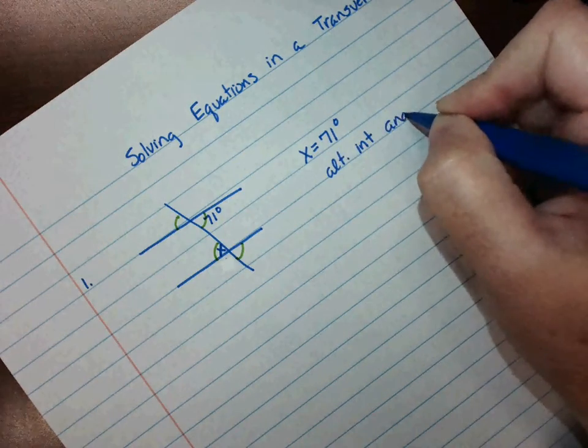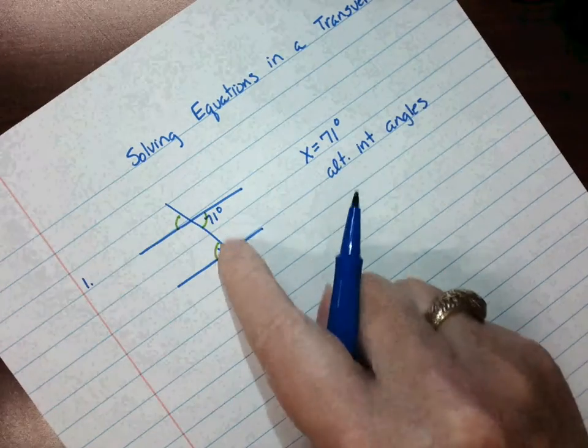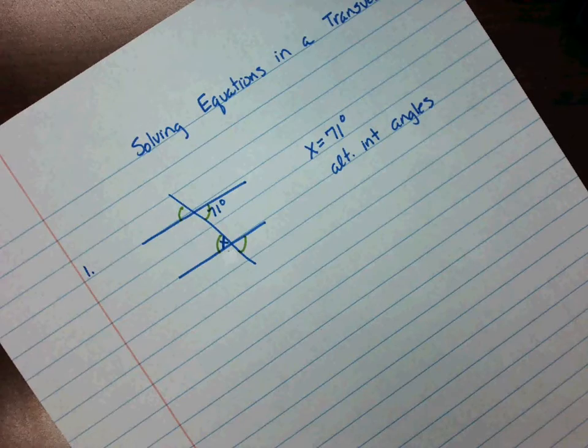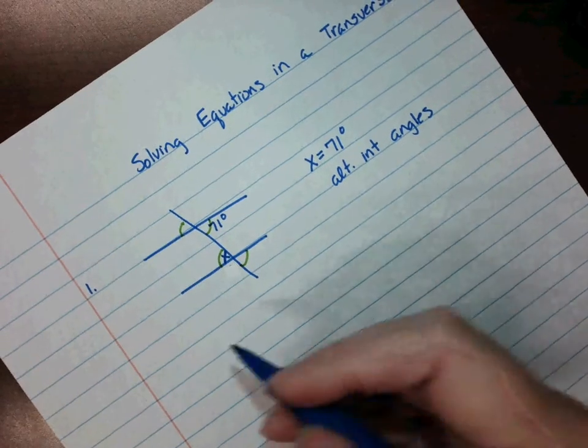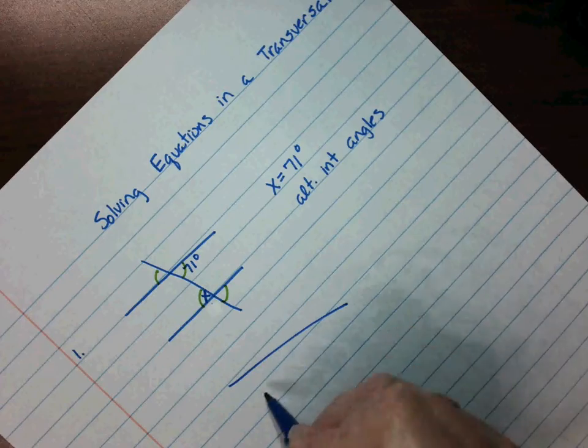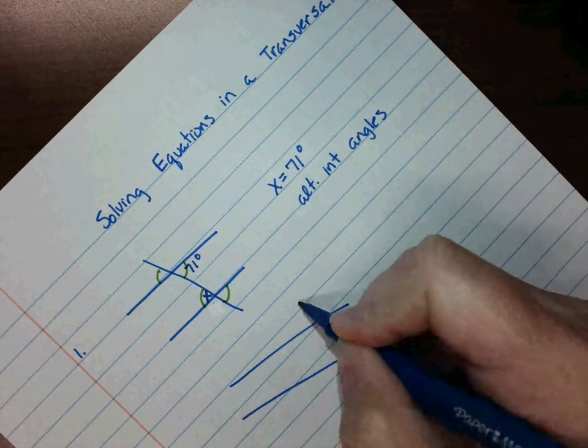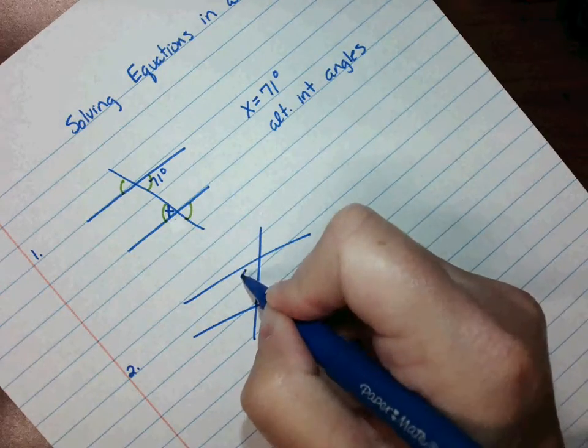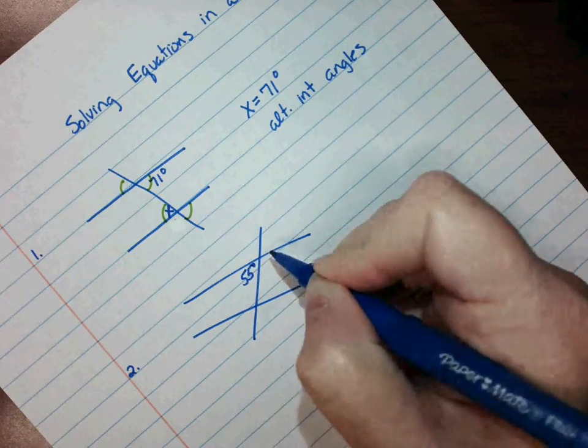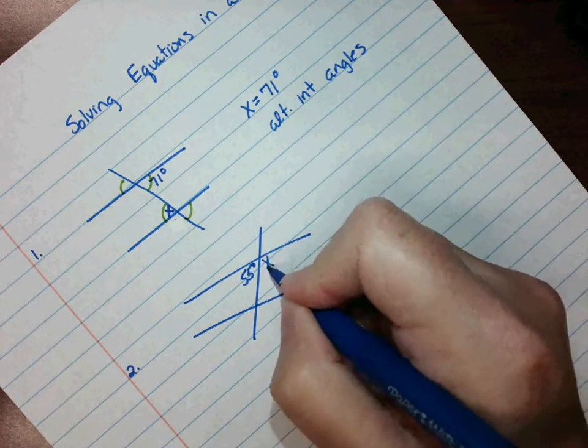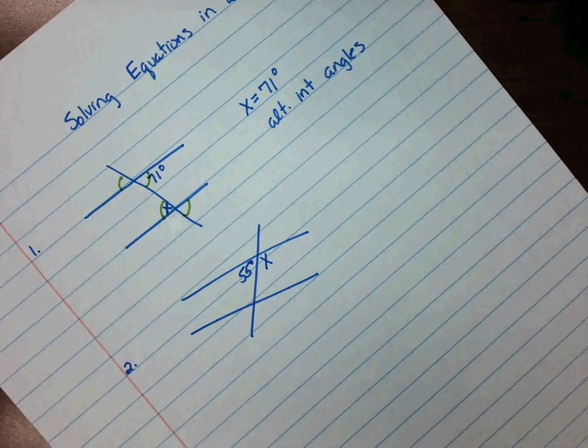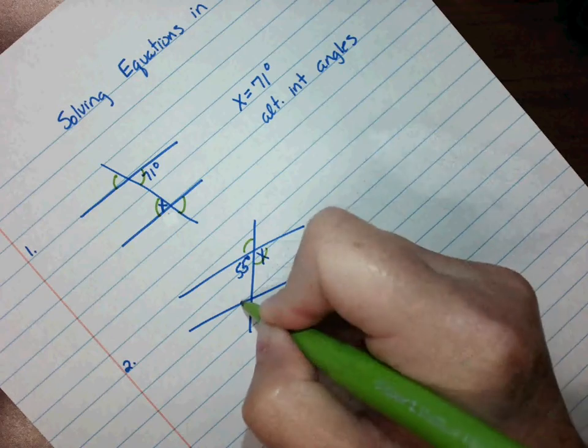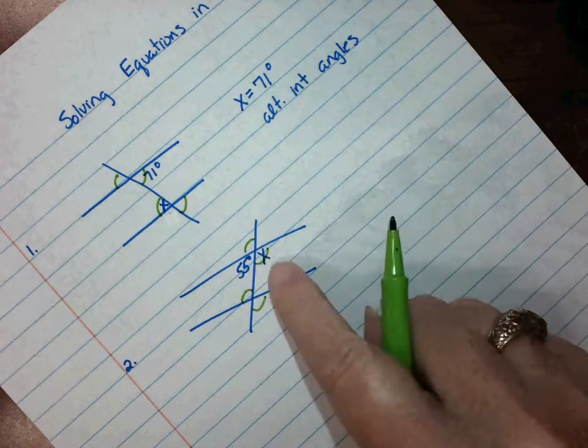Alright, number two. We have this diagram, doesn't have to be perfect, just draw it as best you can. This angle is 55 degrees and they want us to tell what X is.